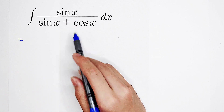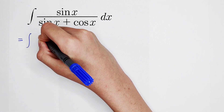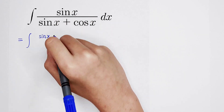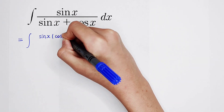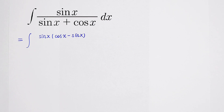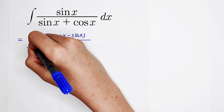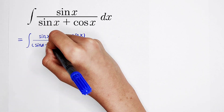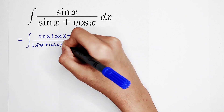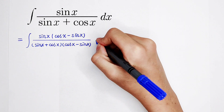So the values of the fraction are the same. It's the integral of — on the numerator, it is sine of x, and I multiply cosine of x minus sine of x on the numerator and on the denominator. The denominator is sine of x plus cosine of x, and then times cosine of x minus sine of x. Don't forget dx.